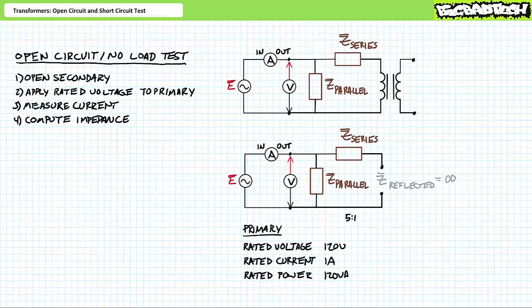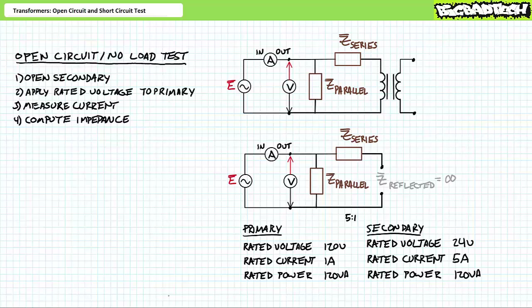Consider a 5-to-1 step-down transformer designed to operate at 60 Hz AC with the following specifications: 120-volt rated voltage and a 1-amp rated current for a total rating of 120 volt-amperes. Using the primary-to-secondary turns ratio, the secondary would produce 24 volts out, capable of carrying 5 amps for a power rating of 120 VA. When 120 volts is applied to the primary and the secondary is open circuited, the ammeter on the primary experiences 200 milliamps of current and current appears to lag voltage by 70 degrees. Keep in mind, no current is flowing in the secondary and no power is being transferred to any load.